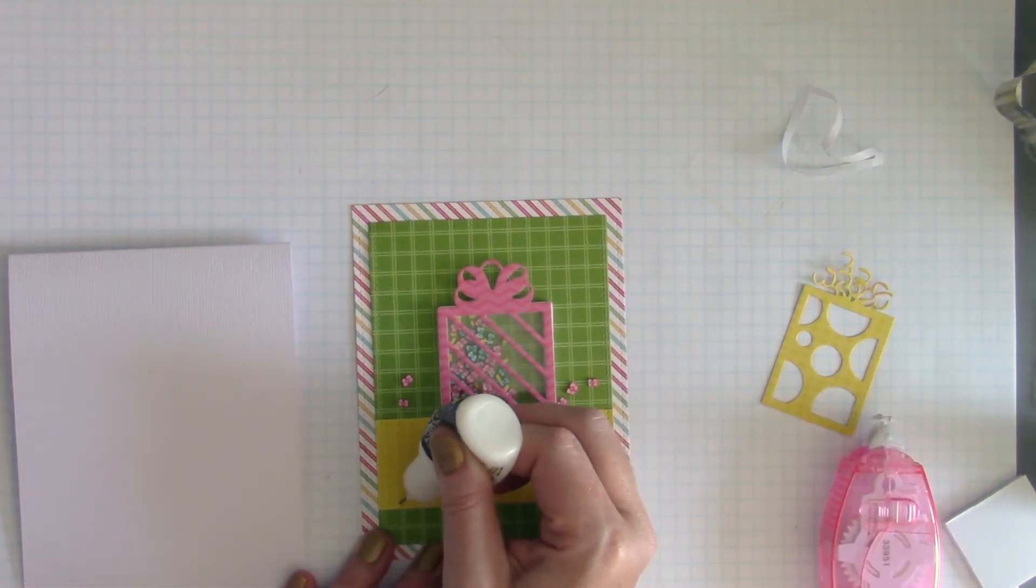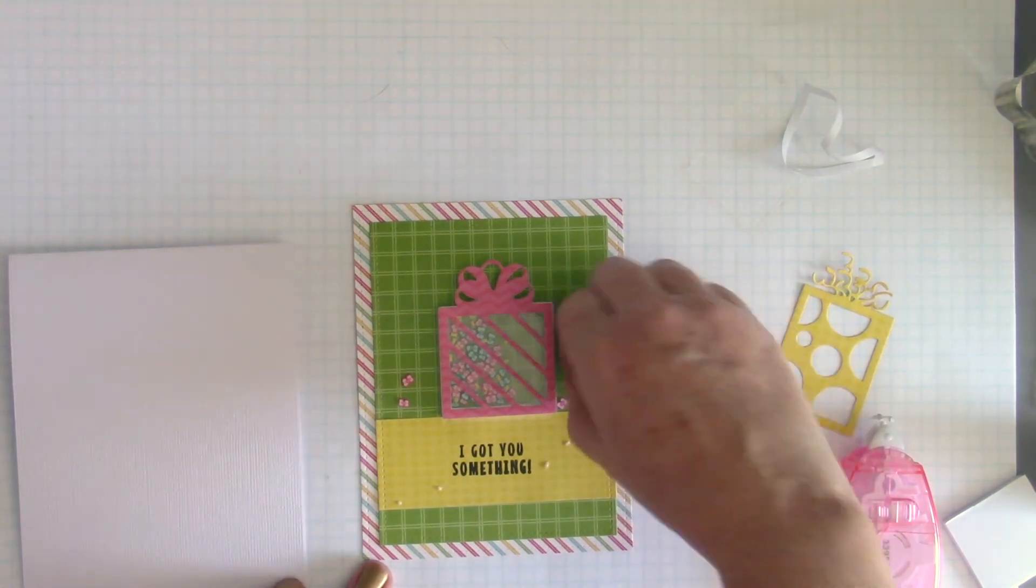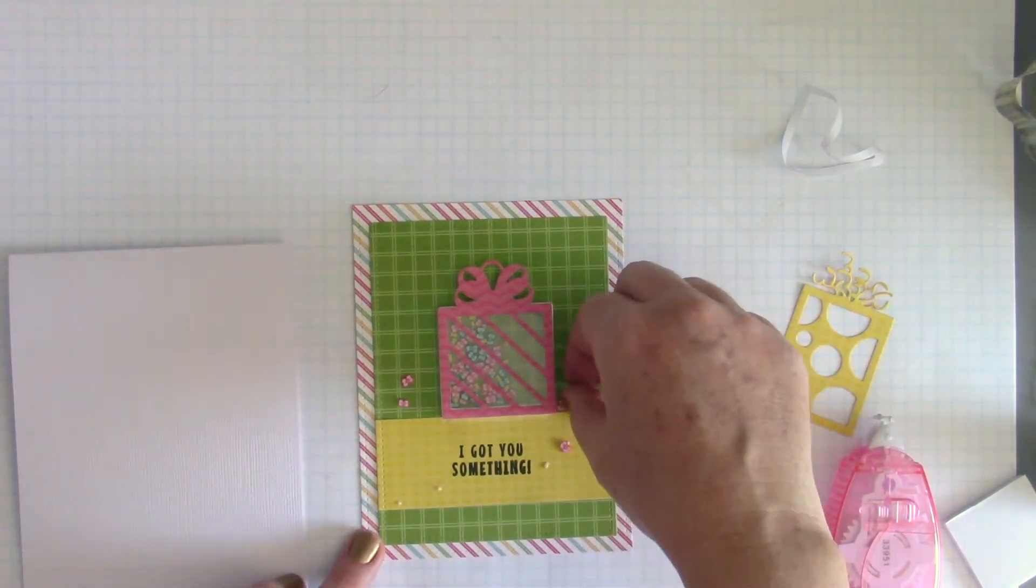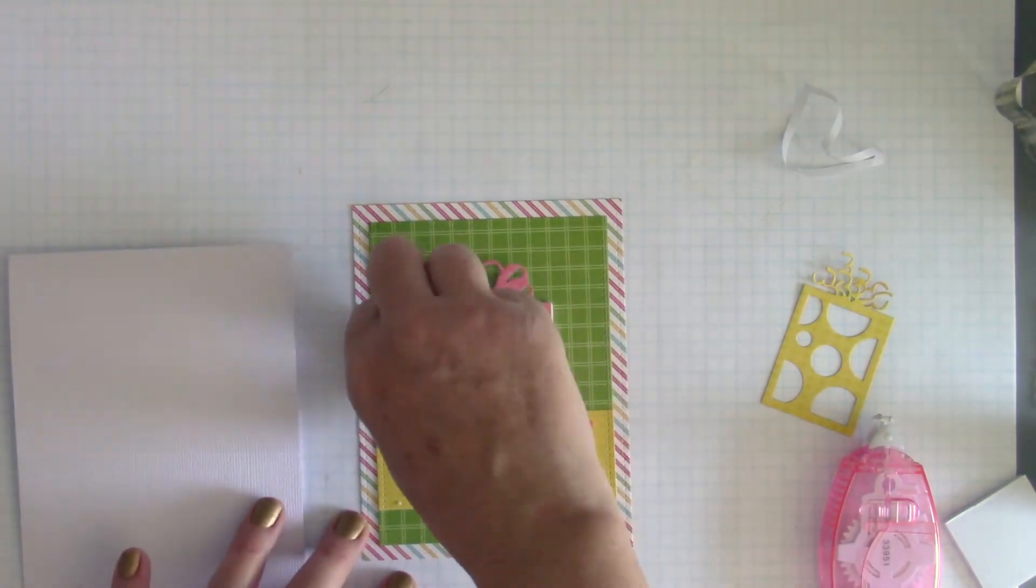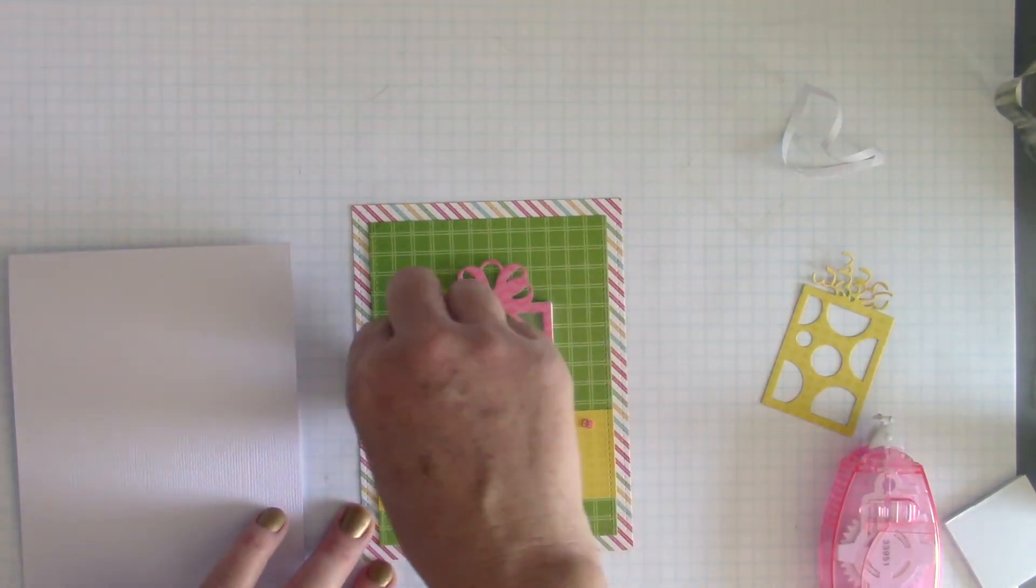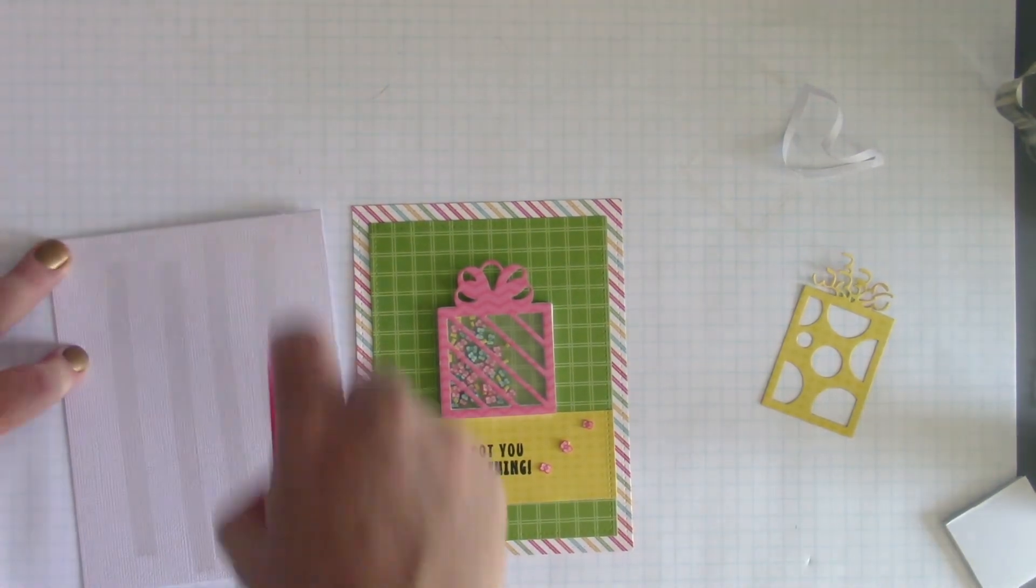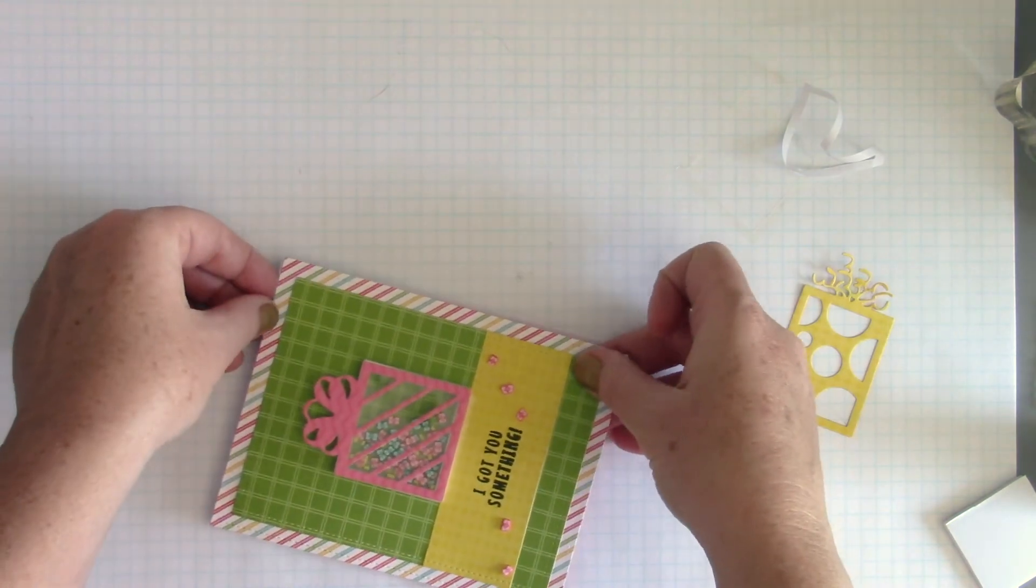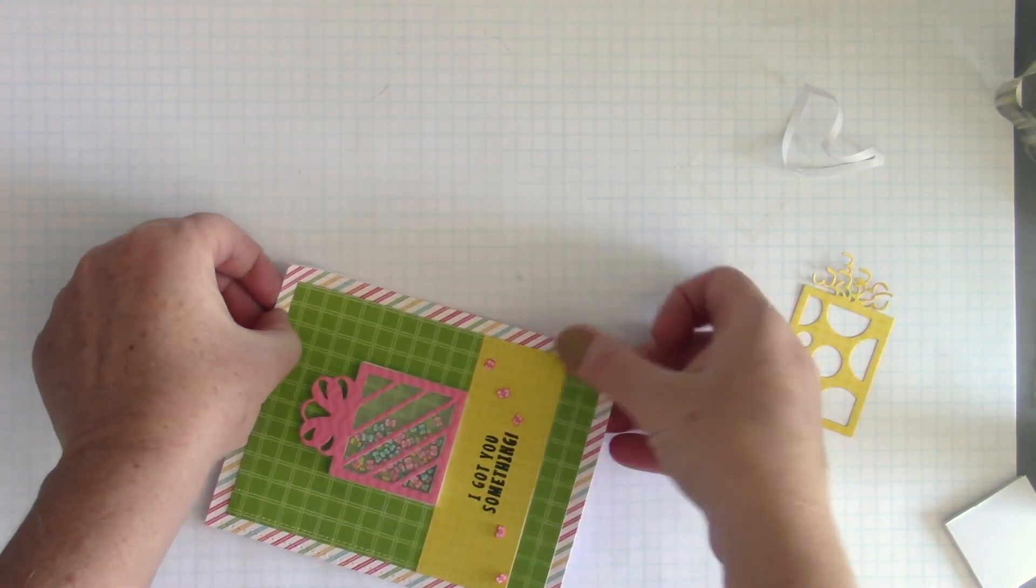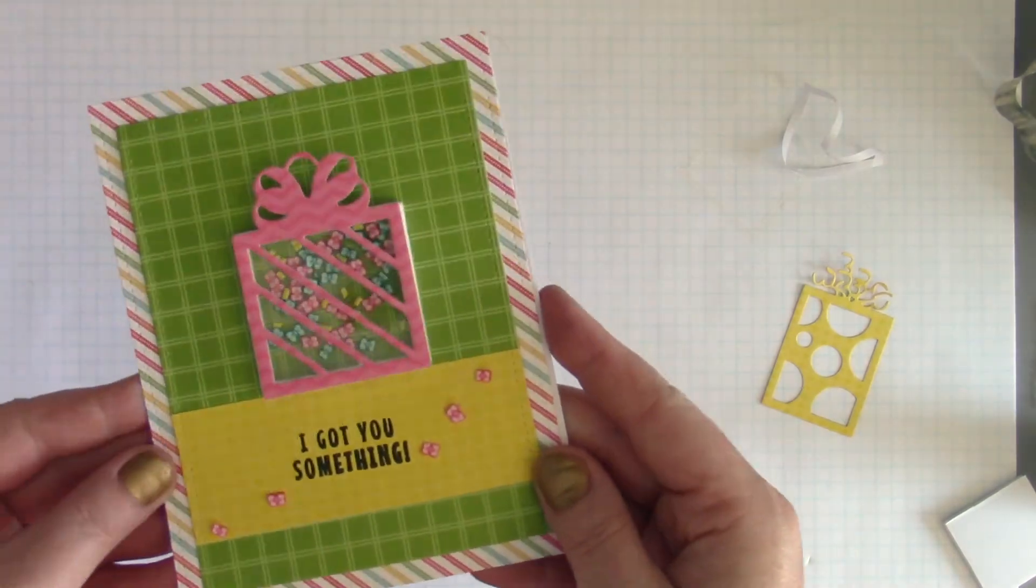I'm gonna do the same thing with those little bows, a trail of them across the sentiment panel there. And I'm going to adhere them with the Ranger multi-media matte once again. So I'm just going to use my ultra fine tip there, put some dots of adhesive down and lay the little bows right on top. So I'll use that same tape runner to adhere the card panel down to the card base. It's four and a quarter by five and a half, a top folding note card, and that's my second shaker card made with the June kit.